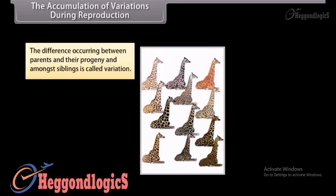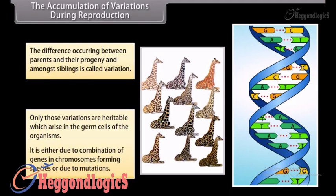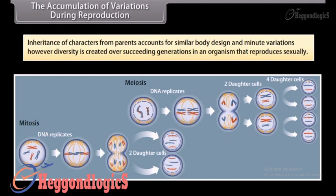Only those variations are heritable which arise in the germ cells of organisms. This is either due to combination of genes in chromosomes forming species, or due to mutations. Inheritance of characters from parents accounts for similar body design and minute variations.